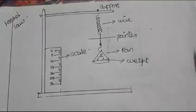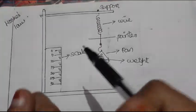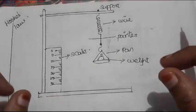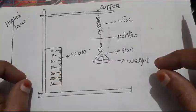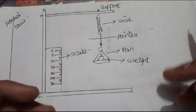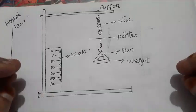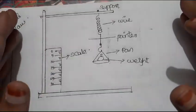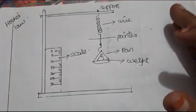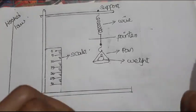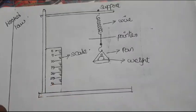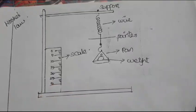Hooke's Law is important. For example, a rubber band — stretch it to a certain limit, it stretches. Beyond that limit, the rubber band breaks. So within a certain limit, the strain produced in the body is proportional to the stress that produces it.